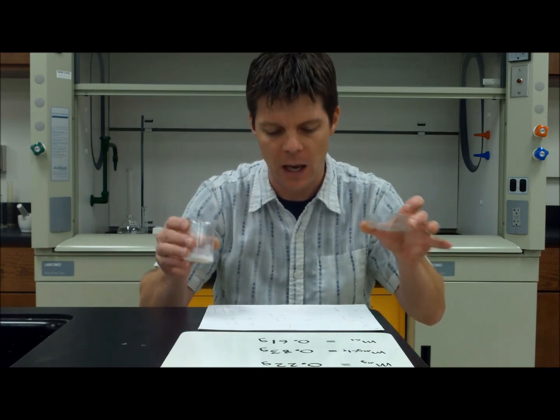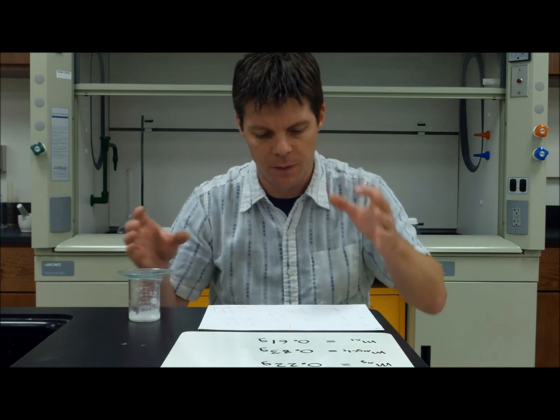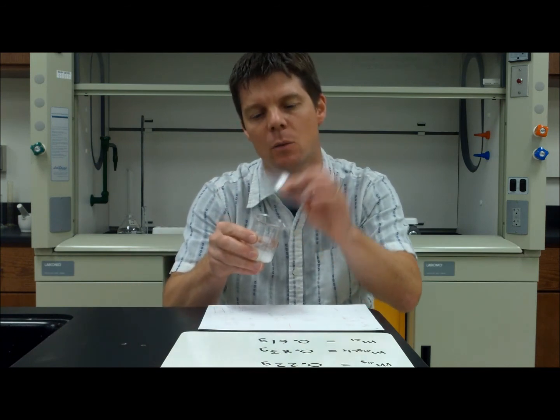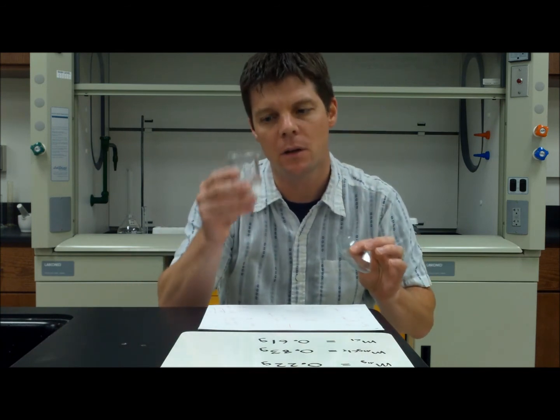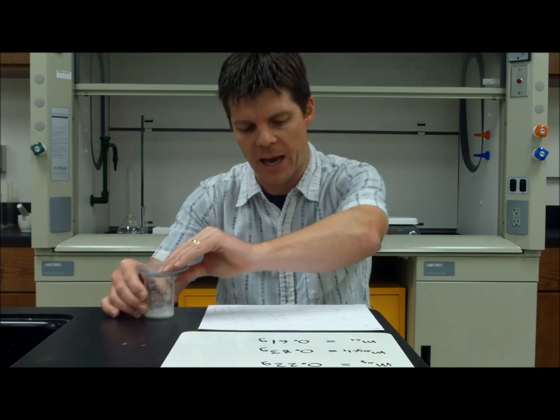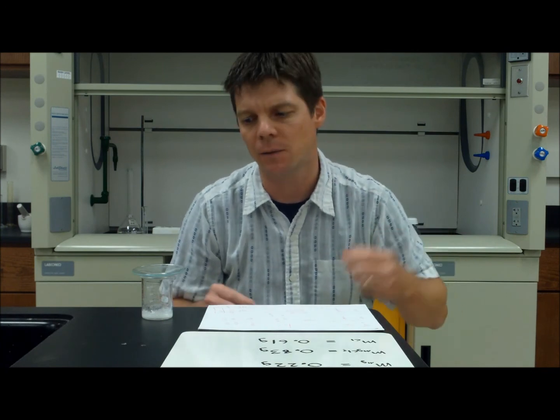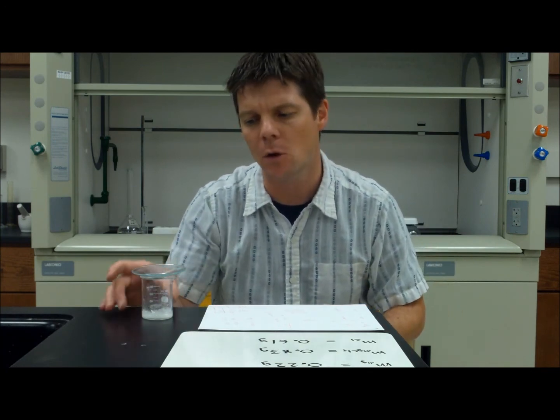Now the watch glass and the beaker by themselves had a mass of 77.74 grams. Now massing this with the watch glass, the beaker and the salt inside, there was a mass of 78.57 grams. So I can subtract and find the mass of that magnesium chloride salt.